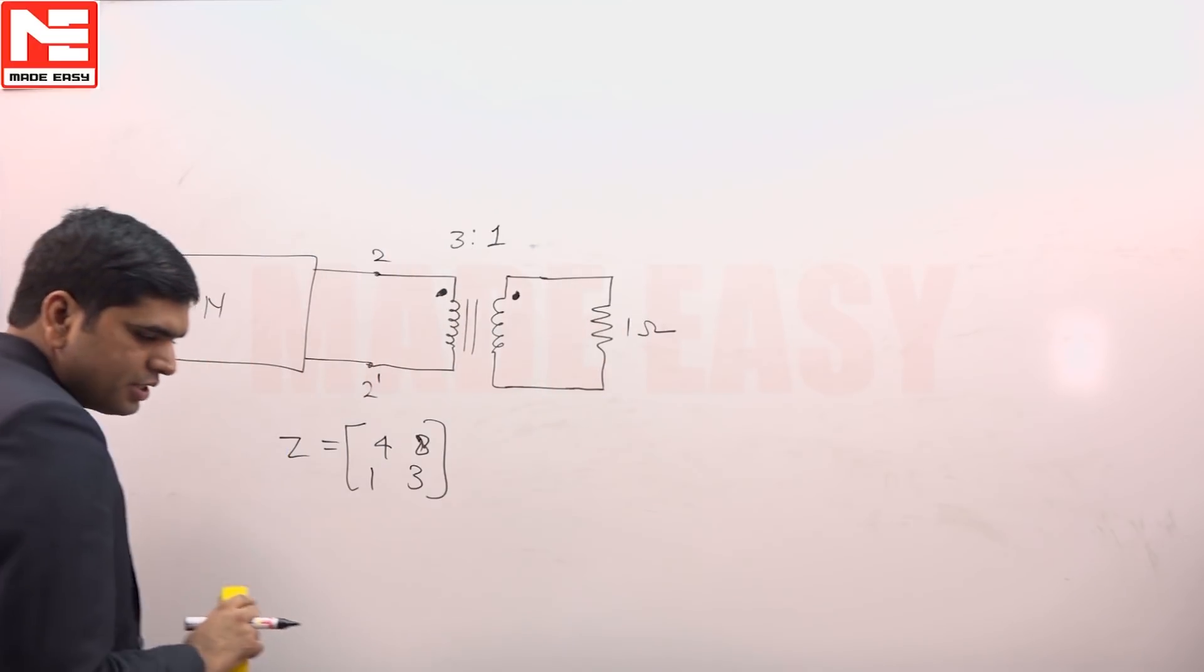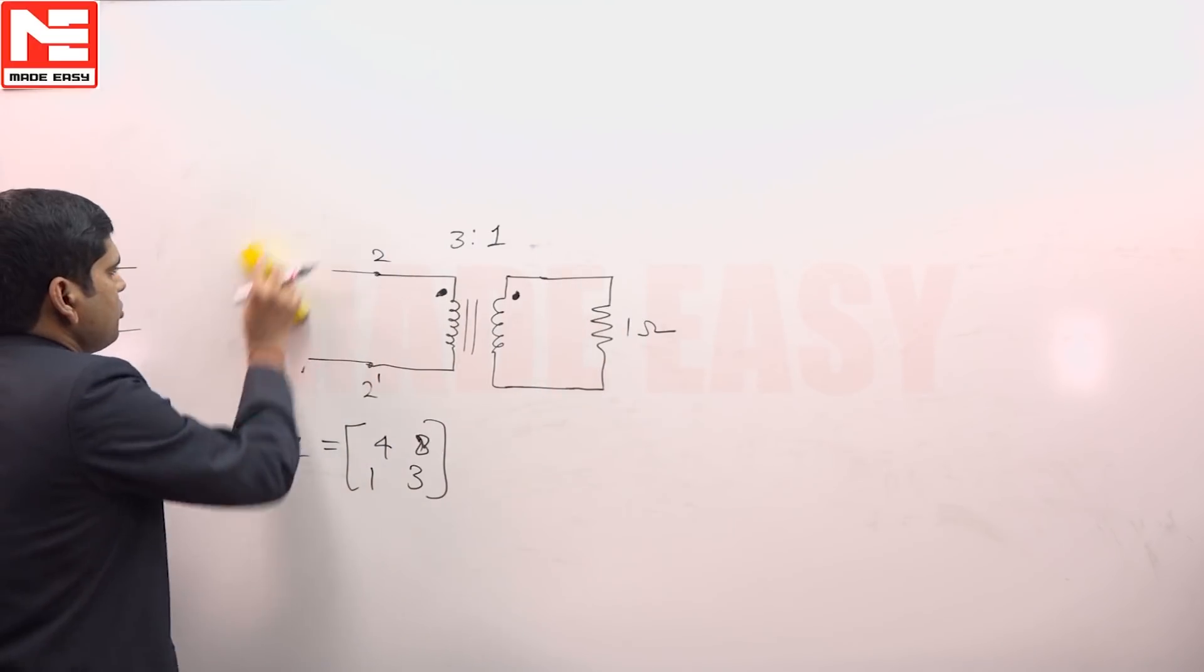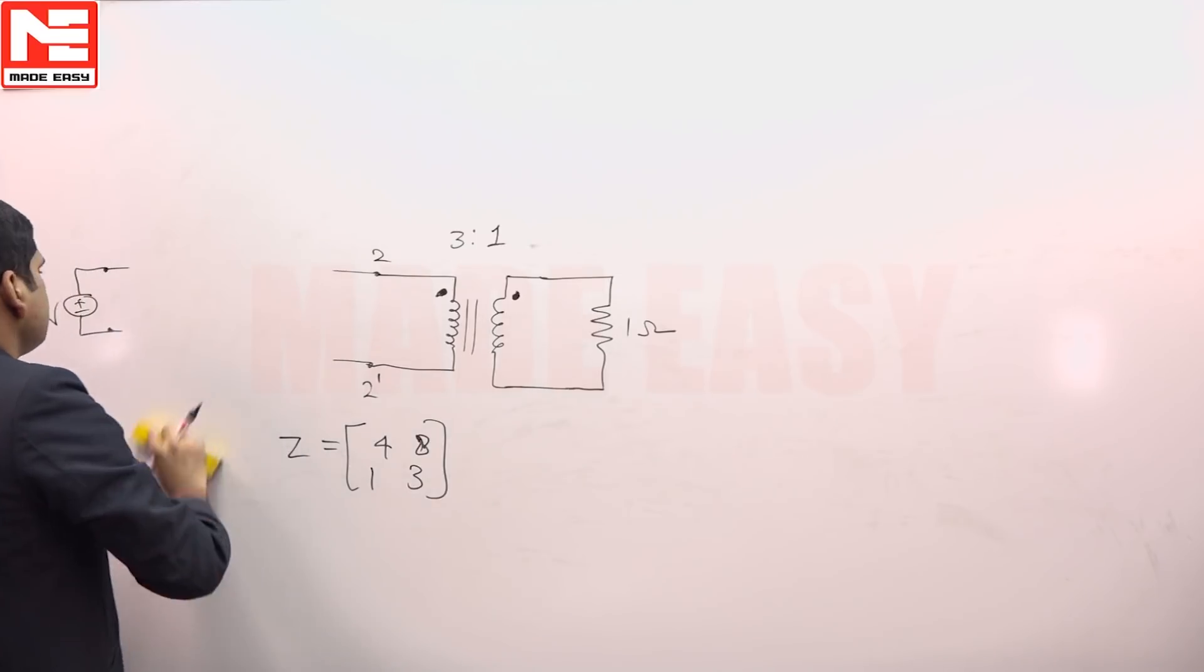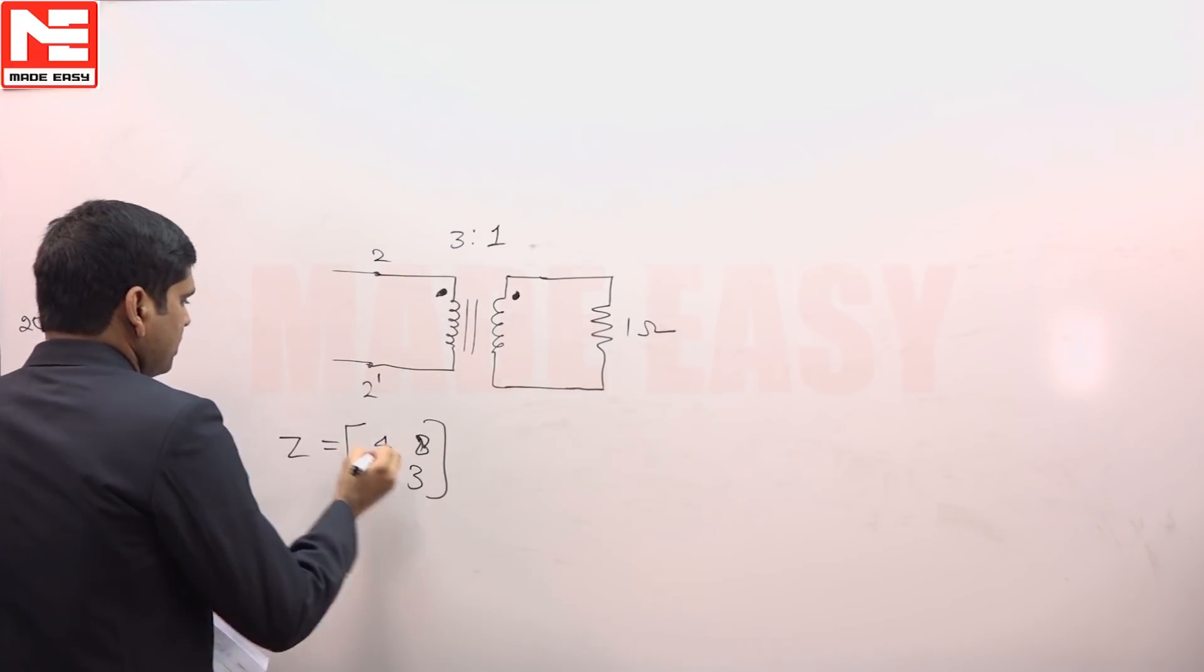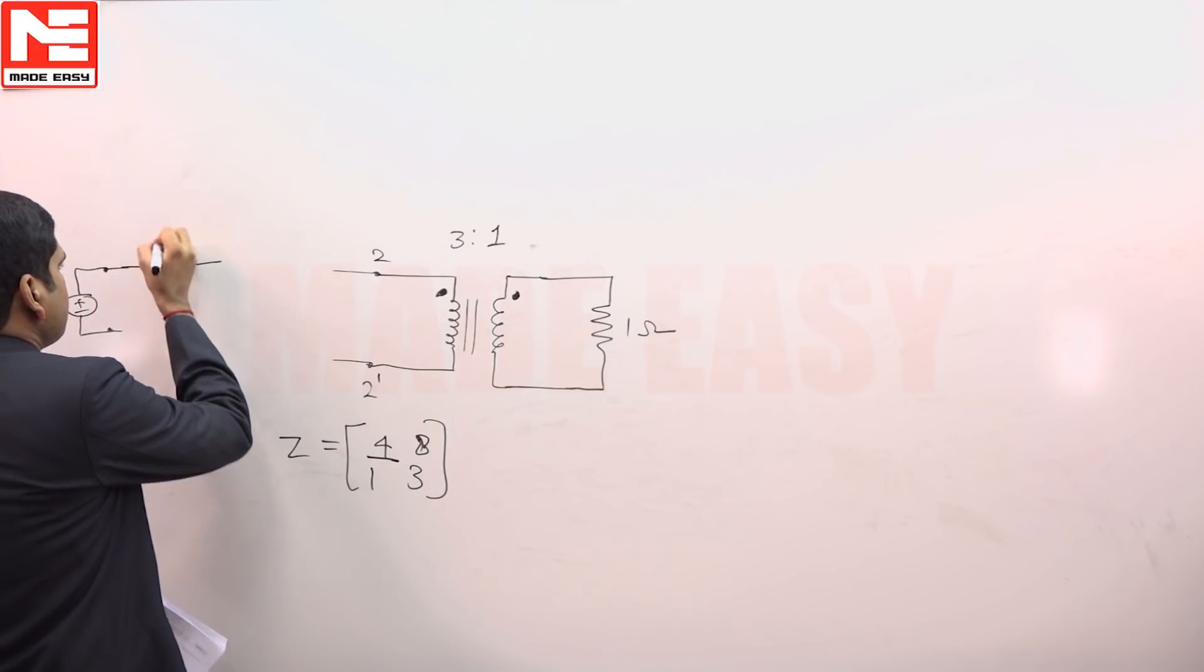Let us first replace this network by its equivalent two-port network. Here Z11 is 4 ohm resistance, then a dependent source and that dependent source comes out as 8 I2.